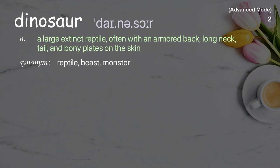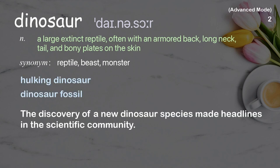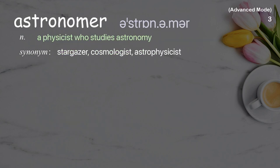Dinosaur: a large extinct reptile, often with an armored back, long neck, tail, and bony plates on the skin. Examples: hulking dinosaur, dinosaur fossil. The discovery of a new dinosaur species made headlines in the scientific community.